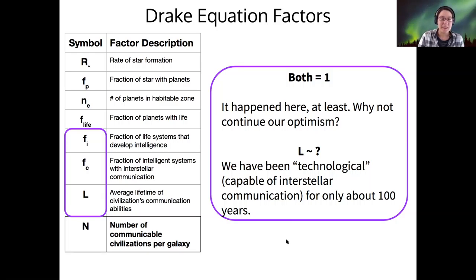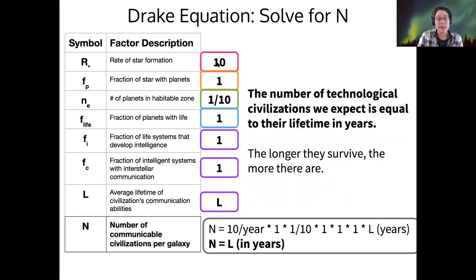So on that optimistic note, if we put all of these optimistic factors together, multiply all of those together, then the 10 here cancels with the one-tenth. Everything else is one. So it turns out then that the number of civilizations we could communicate with is equal to the lifetime of civilization in years. Because remember, a star formation rate was in one over years, our lifetime is in years, so those factors cancel out. And so the lifetime of a civilization gives us the number in the galaxy.